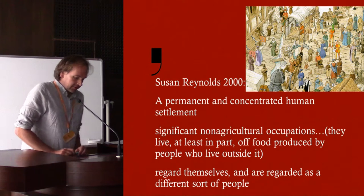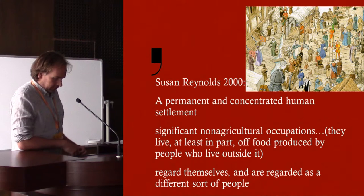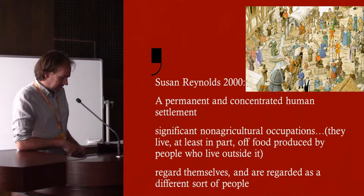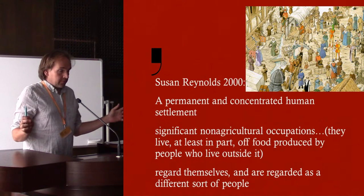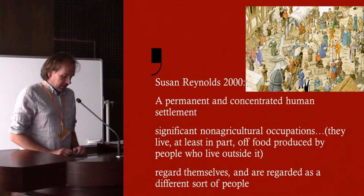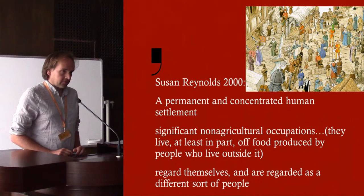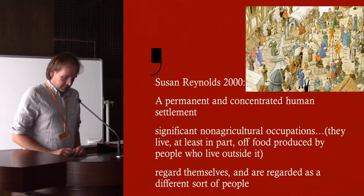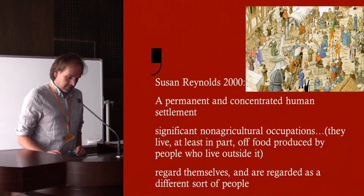I like Susan Reynolds' description of what a town or what is urban is, from her text of 2000. It's a permanent settlement — it can be temporary, but there is a degree of permanence. It's a concentrated settlement with a significant non-agricultural occupation. And the people are different, especially compared to rural people, with different conceptions of time — time is different in a town compared to on a farm.